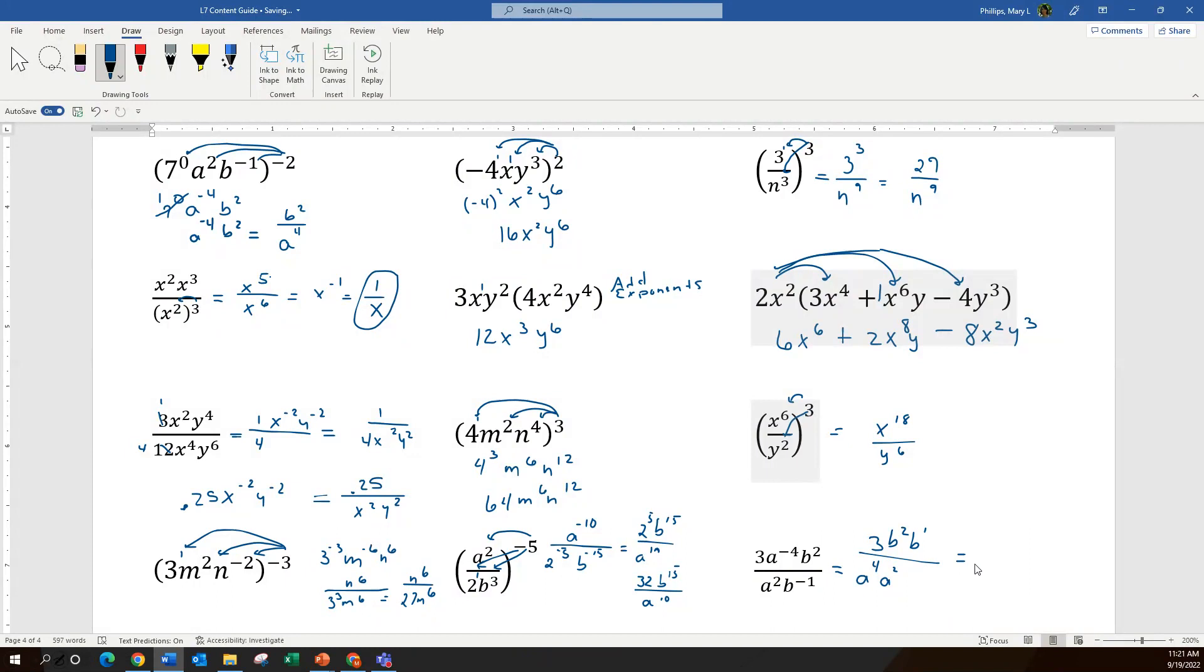Now I can add the exponents top and bottom, so 3 times b to the 3rd divided by a to the 6th. And I have all positive exponents, simplified as much as I can with each variable. So hopefully these examples help you to think through how you would apply the rules of exponents to various sample problems.